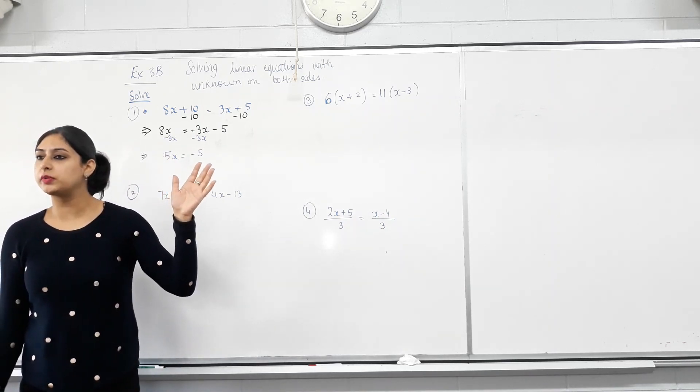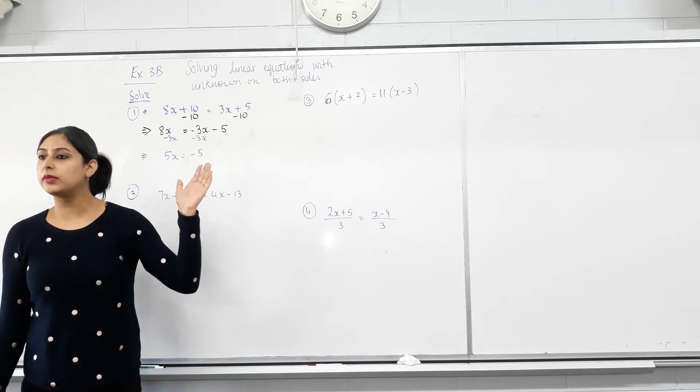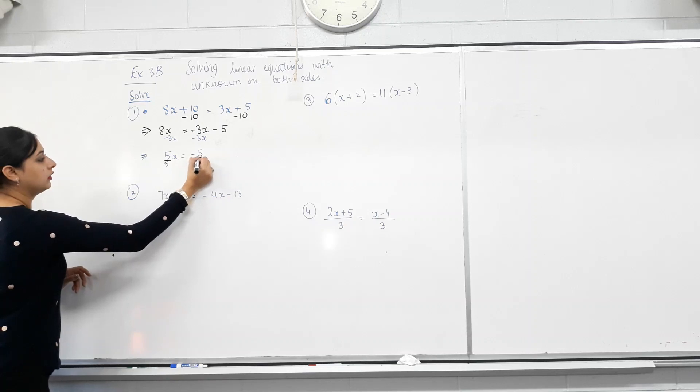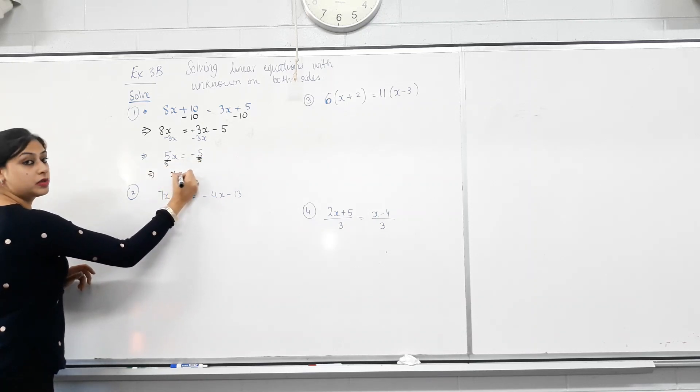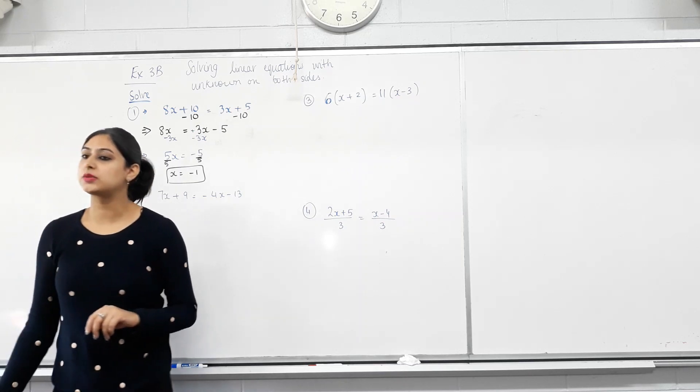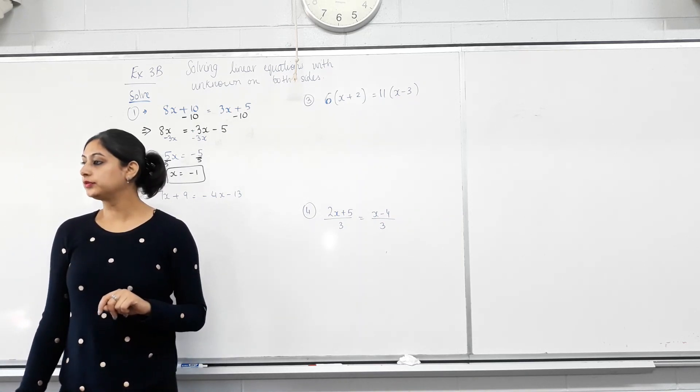It's 5 times x. Eyes on board. So what's the opposite of multiplying? Dividing. And we have x equals? Negative 1. Put the answer in a box so it's explicitly stated. Happy with that? Yes.